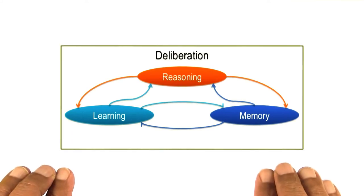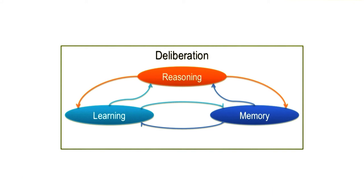These three processes put together, I'll call them deliberation. This deliberation process is one part of the overall architecture of a knowledge-based AI agent.